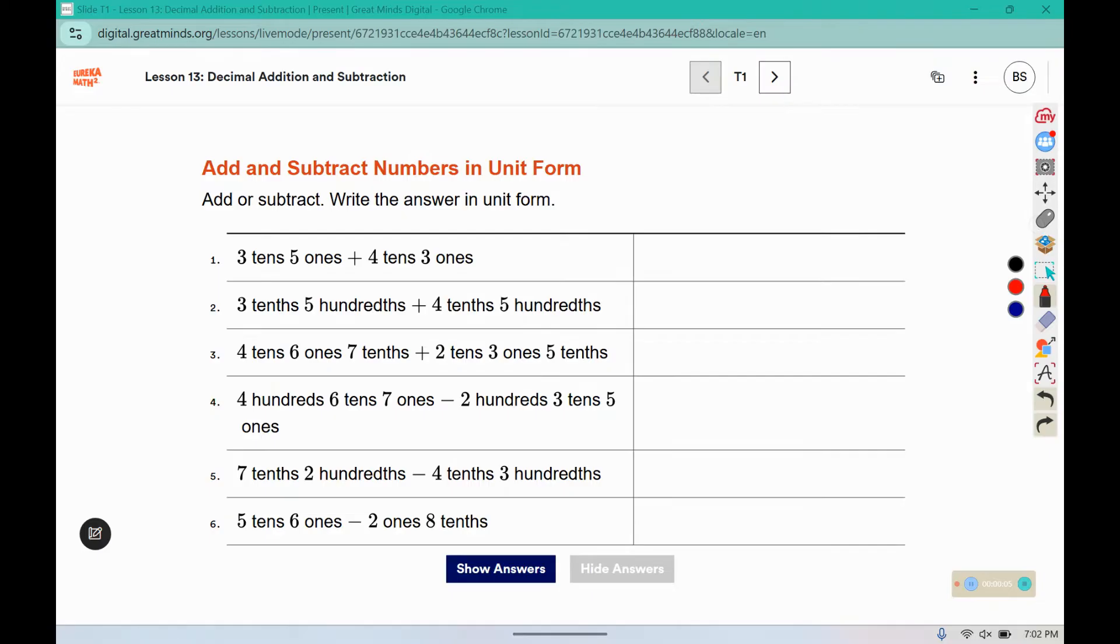Welcome back. For these problems, you are adding or subtracting and writing them in unit form. So if I have 7 tenths and 2 hundredths, and we take 4 tenths and 3 hundredths off, let's see. Let's start with our tenths. 7 tenths minus 4 tenths would be 3 tenths.